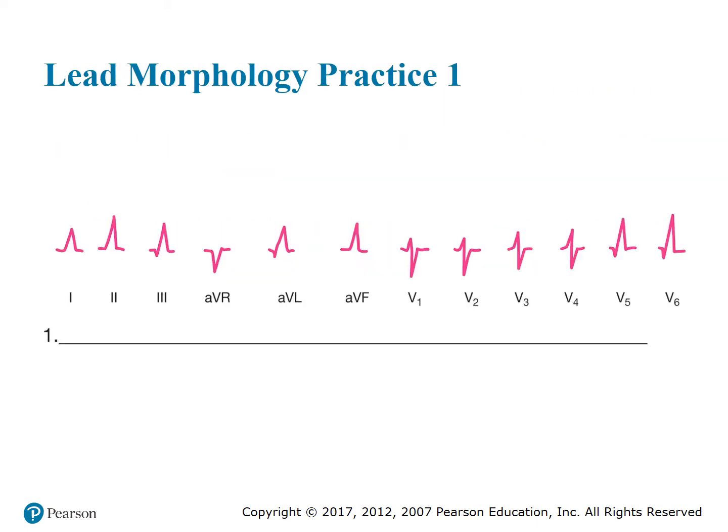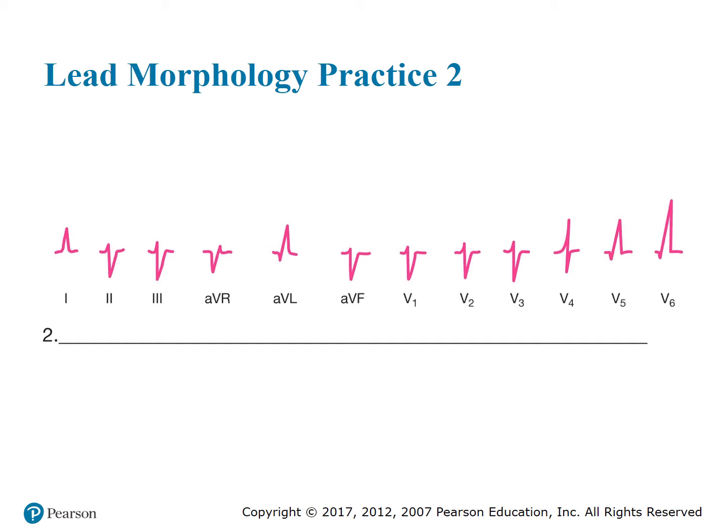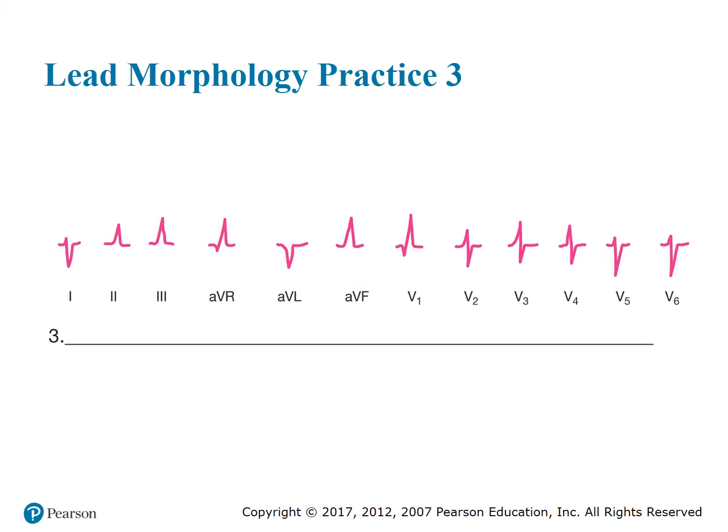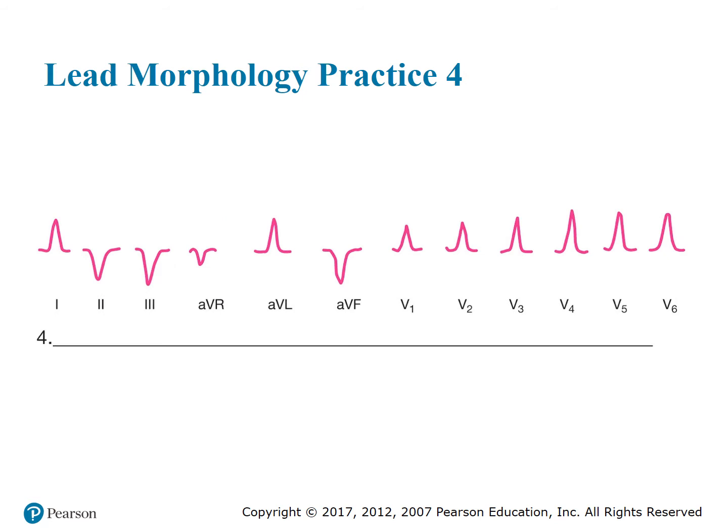With a 12-lead EKG reading, you not only have to figure out those basic forms, but you also have to figure out axis deviation. The main thing to remember when figuring out axis deviation is you want to look at two different leads which are perpendicular from each other - lead one and lead AVF. If lead one is positive and AVF is also positive, we consider that a normal axis.